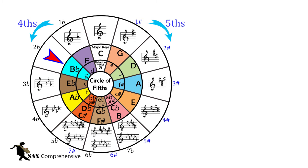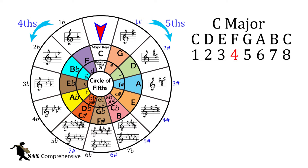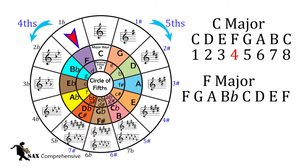If we continue around the circle until we reach C again, the key will still continue to change by a fifth. But it's easier to explain the notation of the circle of fifths if we start again from C, but this time we move anti-clockwise around the circle. So starting from C again, if we move anti-clockwise, the key or scale changes by a fourth. So if we count four notes, that brings us to F, which is the next key. This key has one flat: B flat.